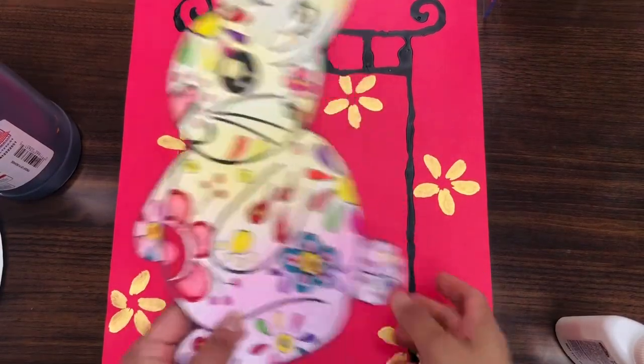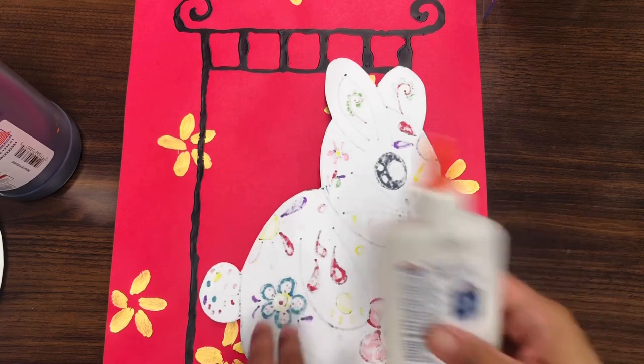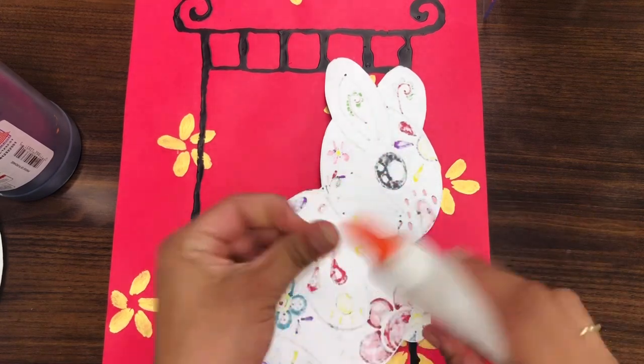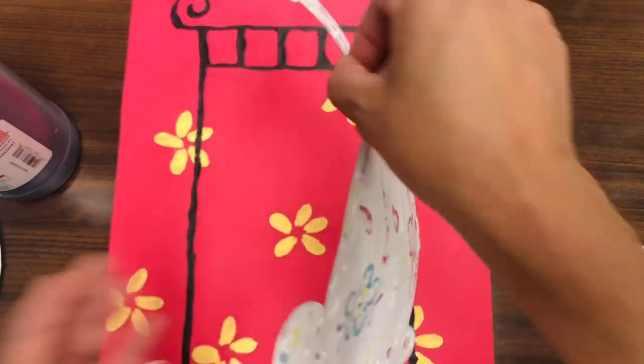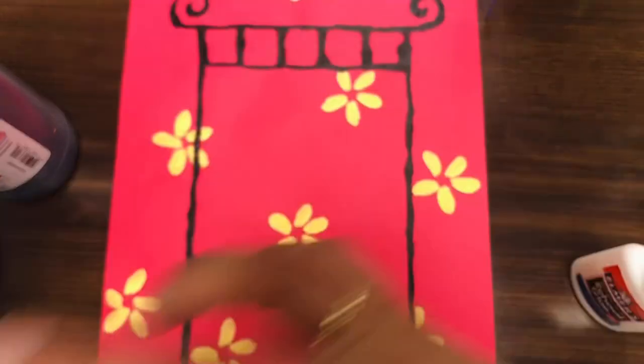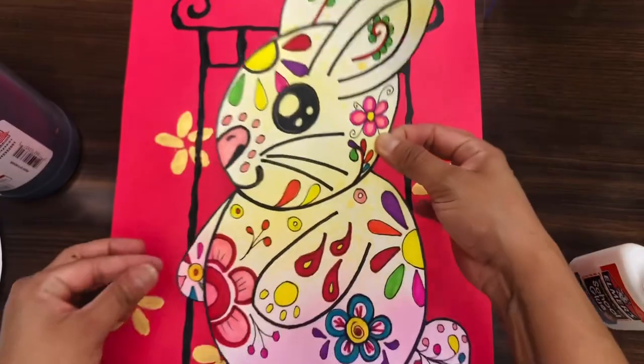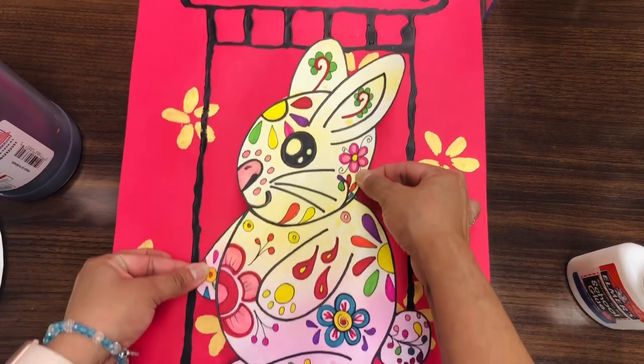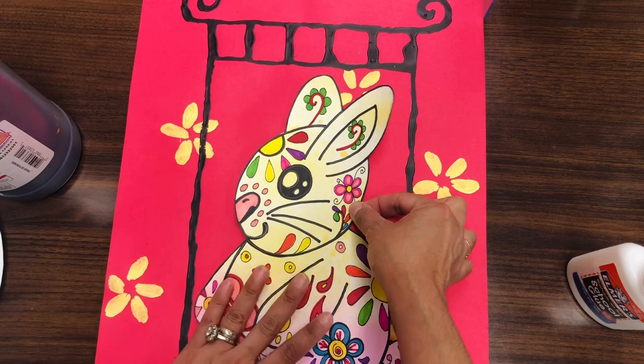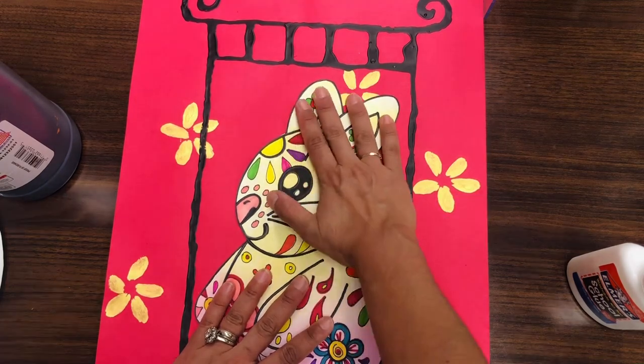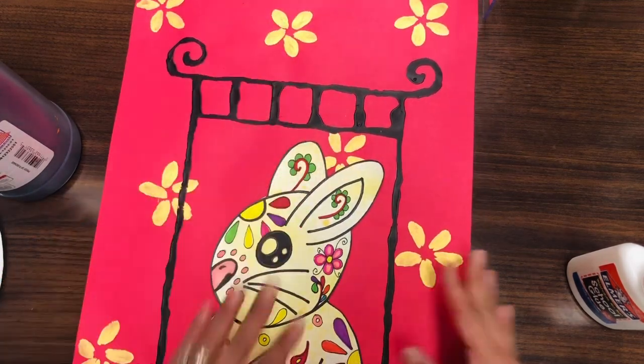Once you have cut out your rabbit, you are going to turn it over and use a little bit of liquid glue to glue it down. Put your rabbit like a big sticker and place it where you want it. I'm putting my rabbit inside of the Chinese temple because we're going to put decorations up here.